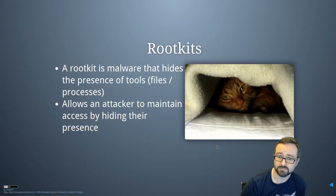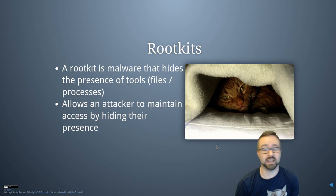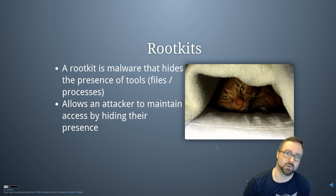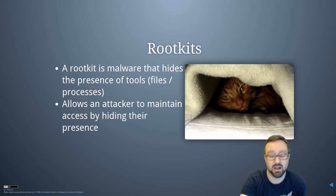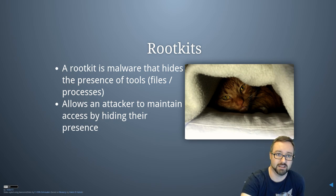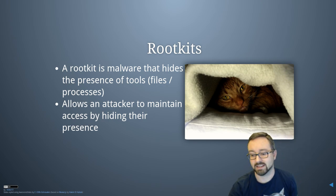A rootkit is malware that hides the presence of tools — it might hide the presence of files on your system so that when you look at what files are there, they're hidden, or it can hide processes that are running so when you look at the process list you don't see them. It allows an attacker to maintain access by hiding their presence. Some of the tools on your operating system, if you're running them directly, might lie to you — they might be acting as a rootkit and hiding compromise from you.